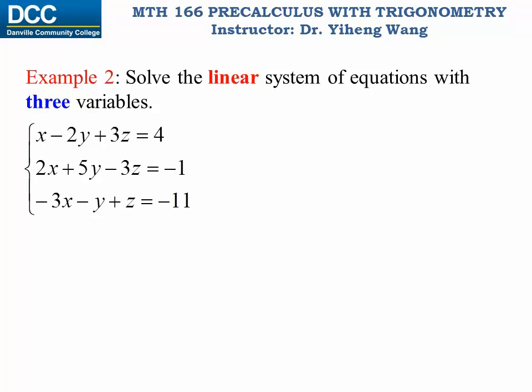Let's look at another example. Again we have three linear equations and we need to solve for the three unknowns x, y, and z. It looks like this example is a lot more complicated than the previous one, and we cannot use the technique of back substitution directly to solve this system. I'm going to show how to solve this system following a strict procedure. First, we number these equations one, two, three.